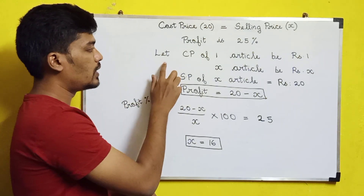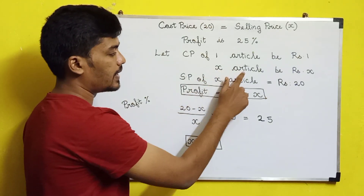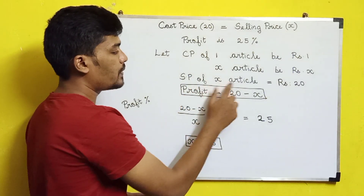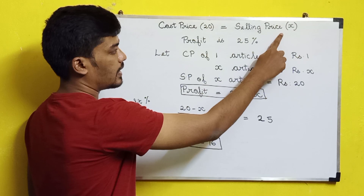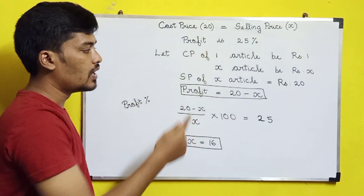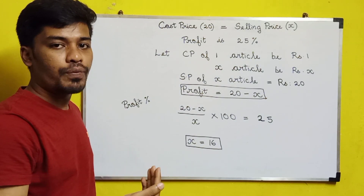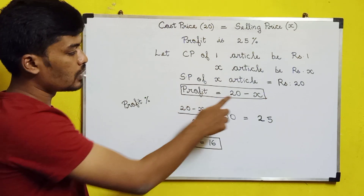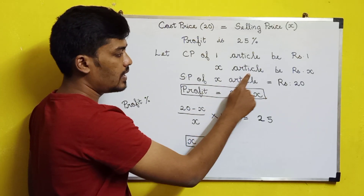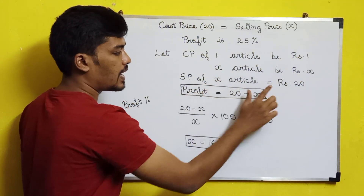Let the cost price of one article be Rs. 1. So the cost price of x articles is Rs. x. The selling price of x articles equals the cost price of 20 articles, which is Rs. 20.